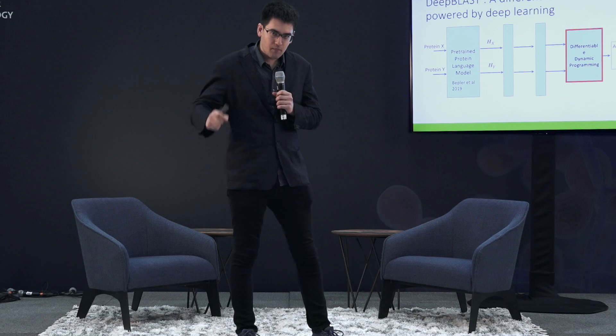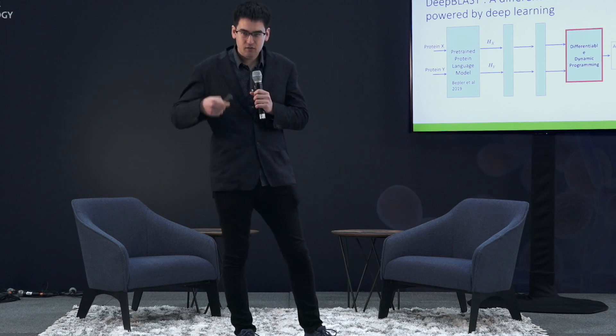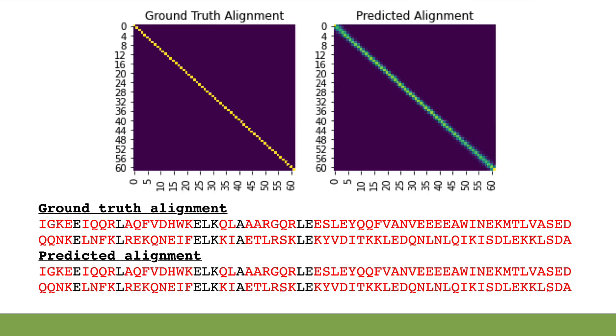Training this algorithm on many structural alignments, we can achieve unprecedented accuracy. These heat maps represent alignments between two proteins, as shown by the positions on the x and y axes. You can see our algorithm is spot on. And more impressively, when you look at the actual alignment, there's very little sequence identity between them — something you can never pick up with classic sequence alignment algorithms.